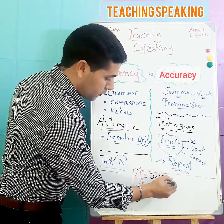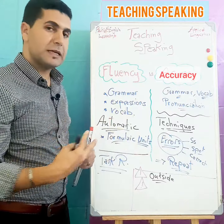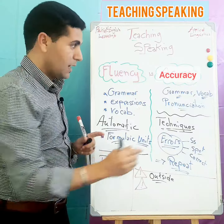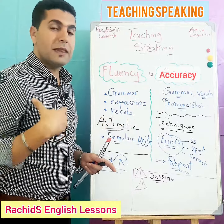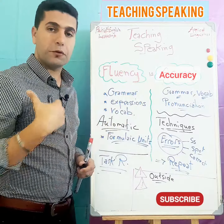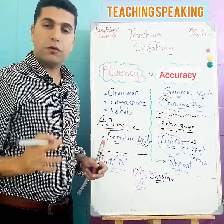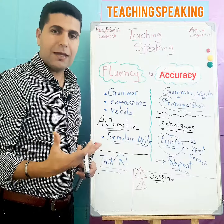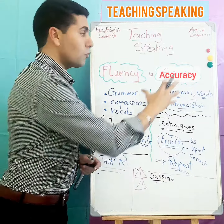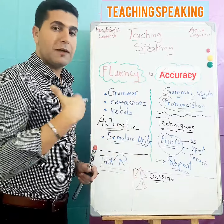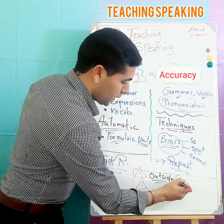Two important things to keep in mind: outside the classroom, students need more accuracy than fluency. Accuracy is very important for delivering a message, for meaning, and for being well understood. For example, in terms of pronunciation, some words pronounced incorrectly can mean something completely different. So in real life, students need accuracy to make the message clear.